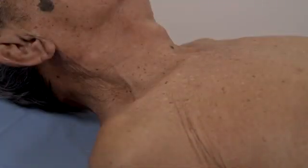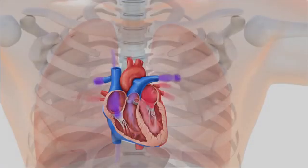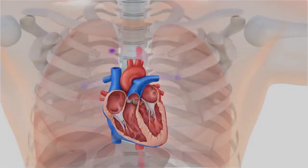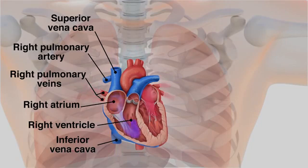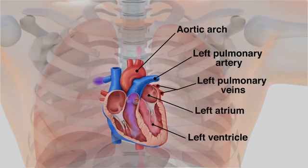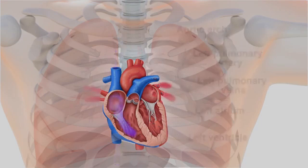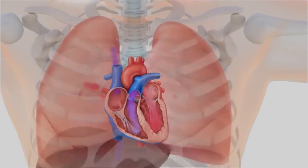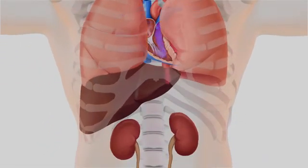If the venous pressure is elevated or the abdominal jugular reflux test result is abnormal, it is very likely that the patient has heart disease, for example, left or right ventricular failure. If the venous pressure and the abdominal jugular reflux test results are normal, the dyspnea or edema probably is not caused by heart disease, but by some other condition, such as pulmonary, liver, or kidney disease.